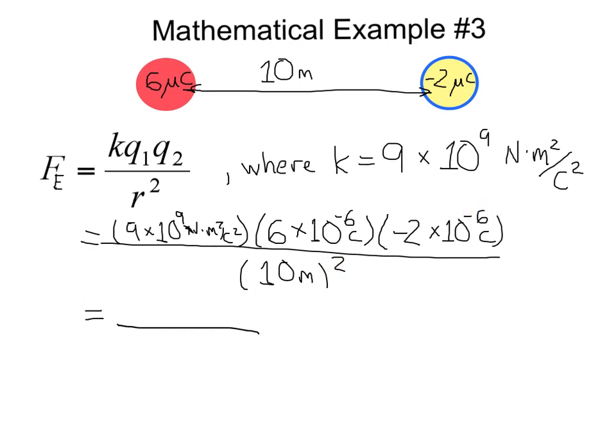So on the numerator, I got negative 0.108 newton meters squared. And the denominator we can see is going to be 10 squared, or 100 meters squared. Completing the calculation, I got negative 1.08 times 10 to the negative 3rd newtons.